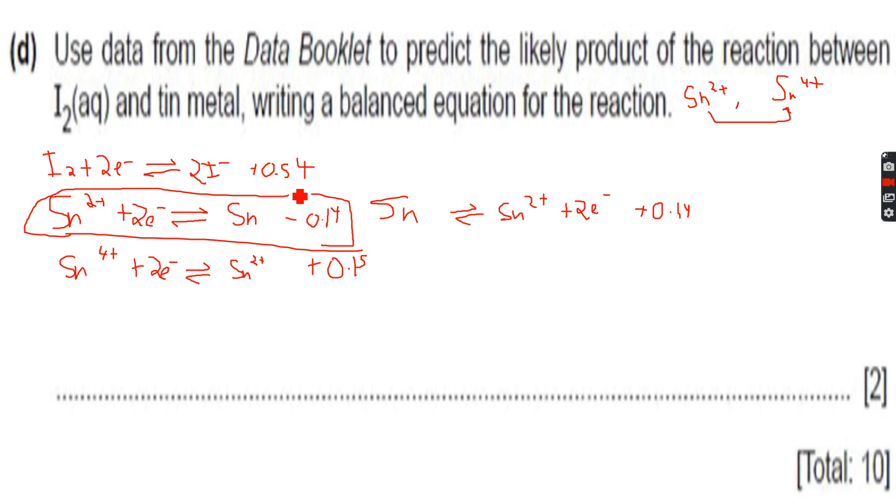We look at plus 0.54 and plus 0.15. Plus 0.54 is still greater, so when we invert, we'll have to invert the third equation. We'll get Sn4+ plus two electrons. If you see what has happened here, initially the reaction was with tin.